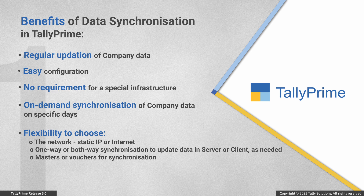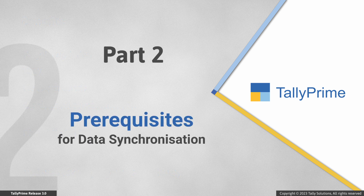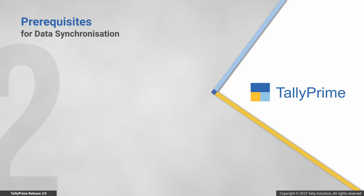In Tally Prime, you have the flexibility to choose the network using which you want to synchronize the data — be it static IP through which the data transfers, or internet securely with the Tally.Net feature. In addition, you can choose one-way synchronization or both-way synchronization, based on which the data will be updated in the server or client company. You can also choose to synchronize only masters when they are created, or voucher types as per your requirement.